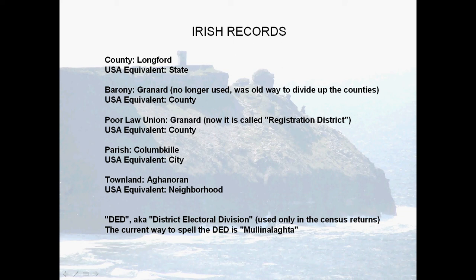DED stands for District Electoral Division and is found in the census records. It may carry a completely different city name or townland name than you'll find in the registration records.